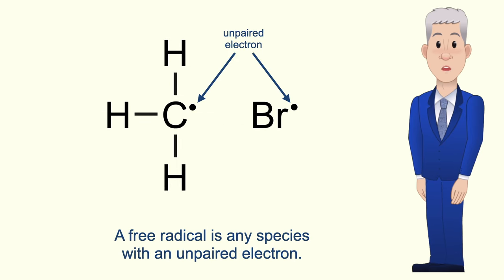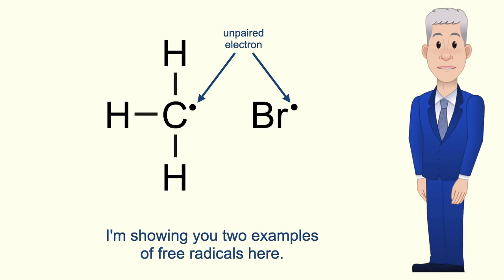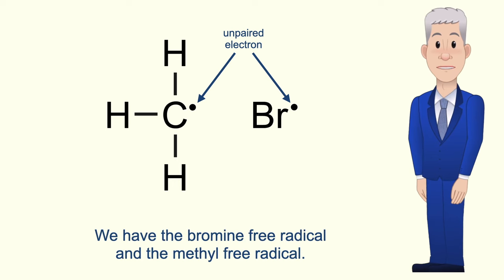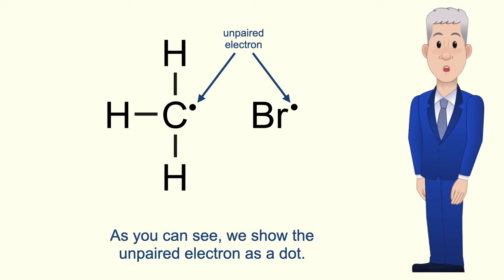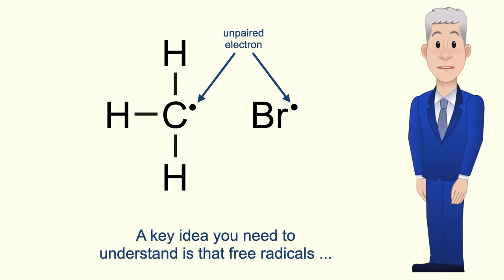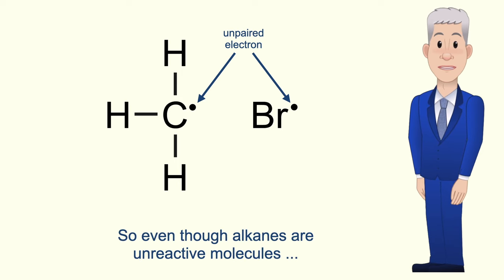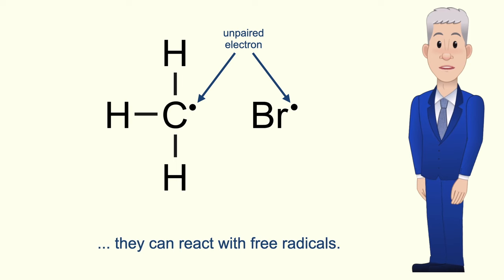A free radical is any species with an unpaired electron. I'm showing you two examples of free radicals here: the bromine free radical and the methyl free radical. As you can see, we show the unpaired electron as a dot. A key idea you need to understand is that free radicals are highly reactive species, so even though alkanes are unreactive molecules they can react with free radicals.